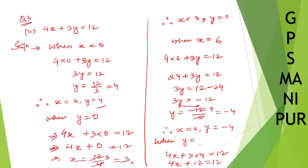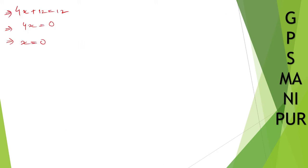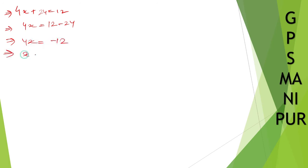So let us take y is equal to 8 instead. 3 into 8 is equal to 24. So 4x plus 24 is equal to 12, giving 4x is equal to 12 minus 24, which is minus 12. So x is equal to minus 12 divided by 4, which is minus 3. Therefore, y is equal to 8 and x is equal to minus 3.